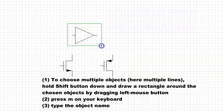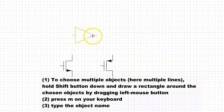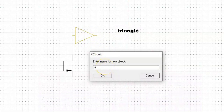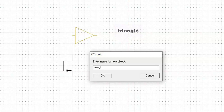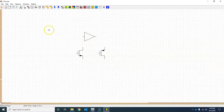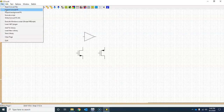To choose the third symbol, click Shift and draw a rectangle around it by dragging the left mouse button so it is highlighted, then simply type M from your keyboard and name this symbol as triangle, then press OK.